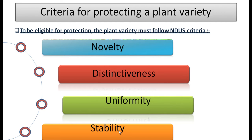The criteria for protecting plant varieties — to be eligible for protection, a plant variety must satisfy NDUVS: that is Novelty, Distinctiveness, Uniformity, and Stability. These are the selection criteria for variety protection.